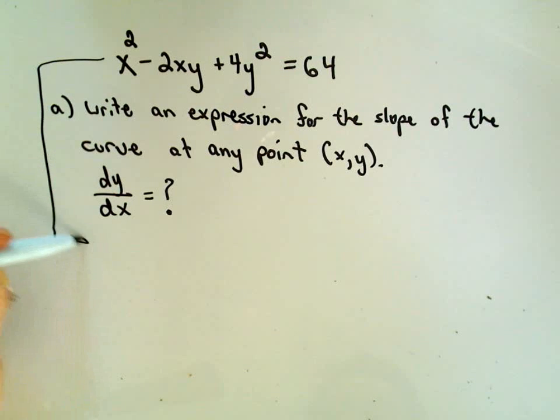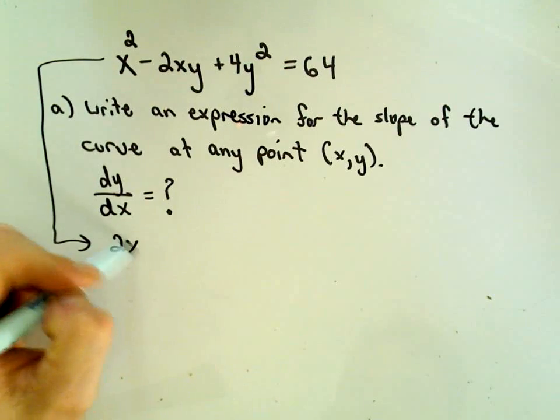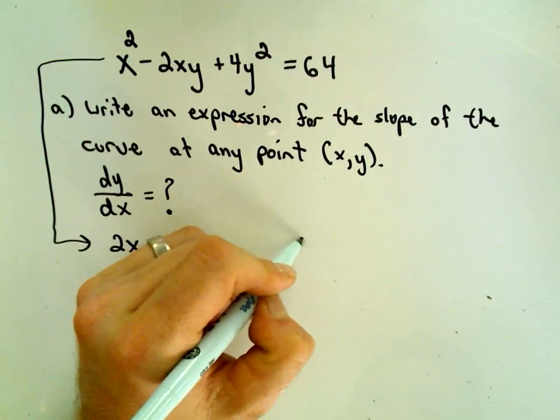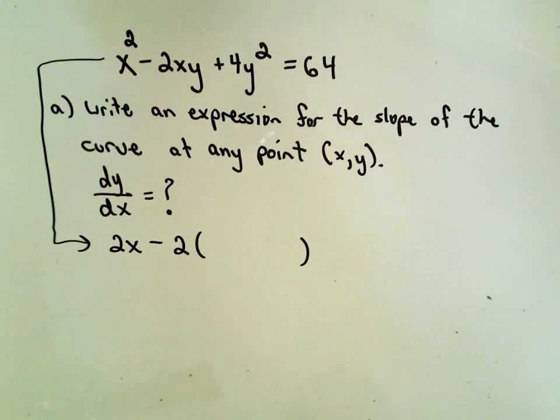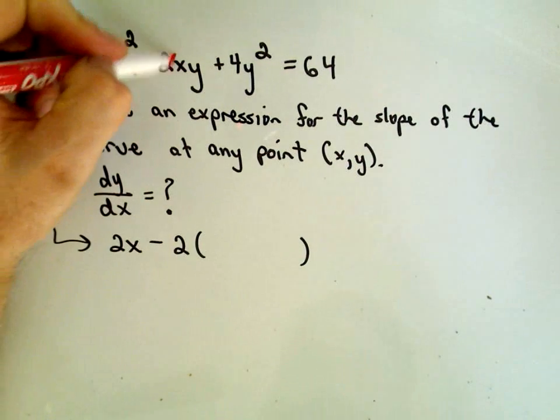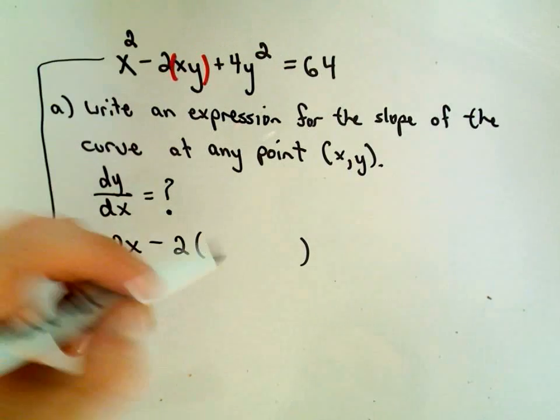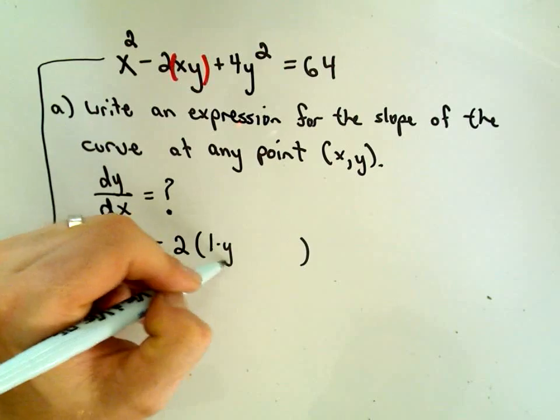Okay, so if I take the derivative with respect to x on the left side, I'm going to get 2x minus 2. And now, I like to think about the original xy as being in parentheses. And then I'm going to take the derivative of that stuff using the product rule. So the derivative of x would be 1, leave the y alone.